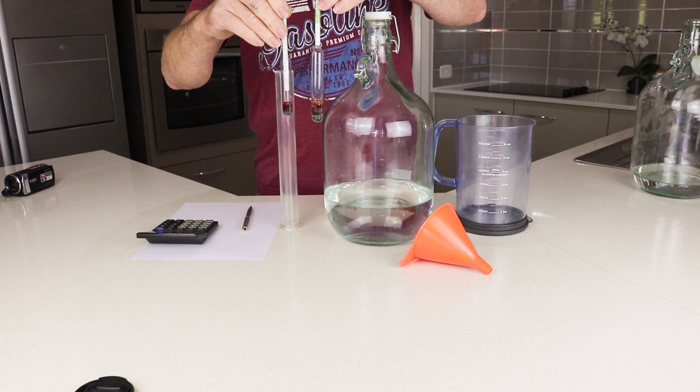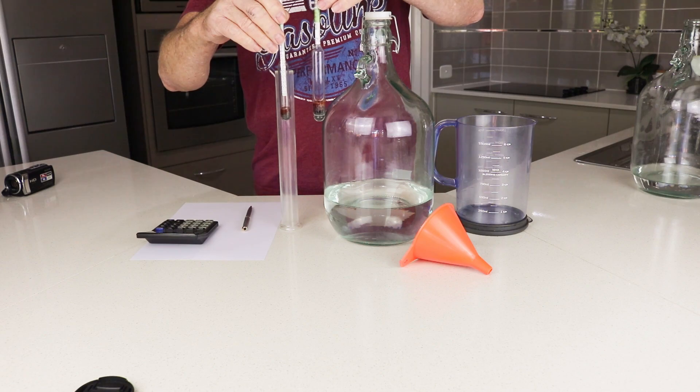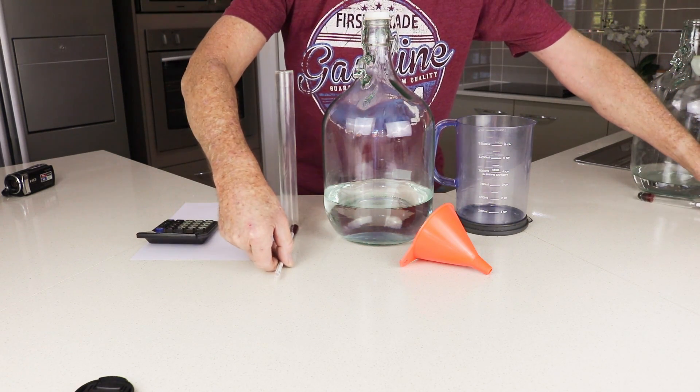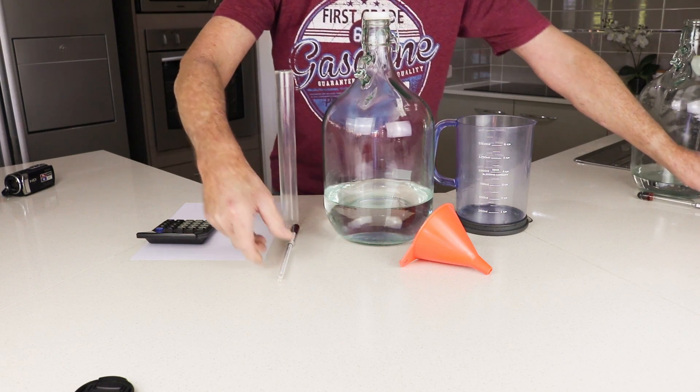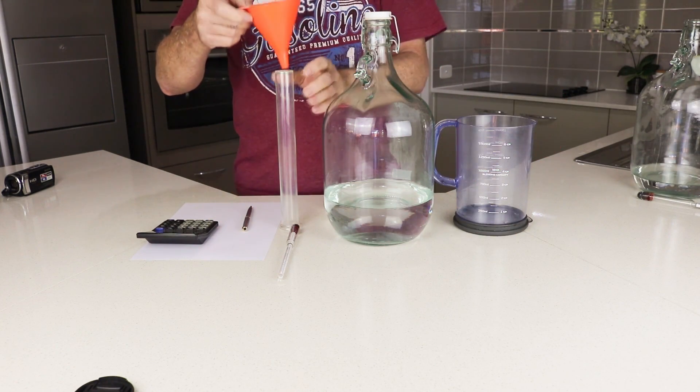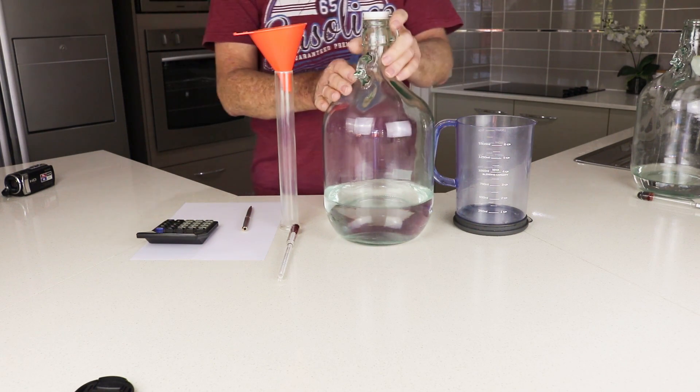Let's work out how to actually dilute this distillation to 40% alcohol by volume. First, we've got our distillate here and we need to find out how strong it is. We use the alcohol meter, not the hydrometer used for making the wash in the first place.